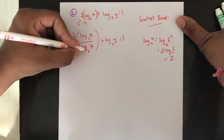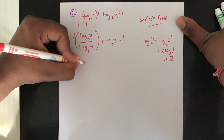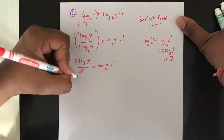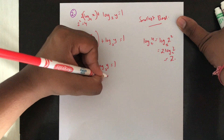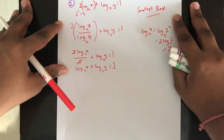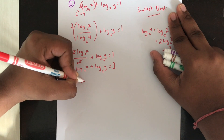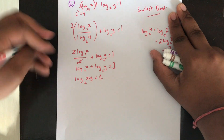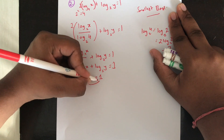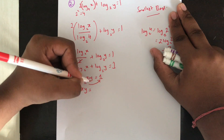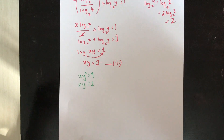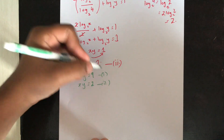So 2 log x base 2 divided by 2 gives log x base 2. Adding log y base 2, I'm left with log x base 2 plus log y base 2 equals 1. Both bases are 2, so by the product law this becomes log (x · y) base 2 equals 1. Removing the log: x · y equals 2 to the power 1, which equals 2. This is equation 2.